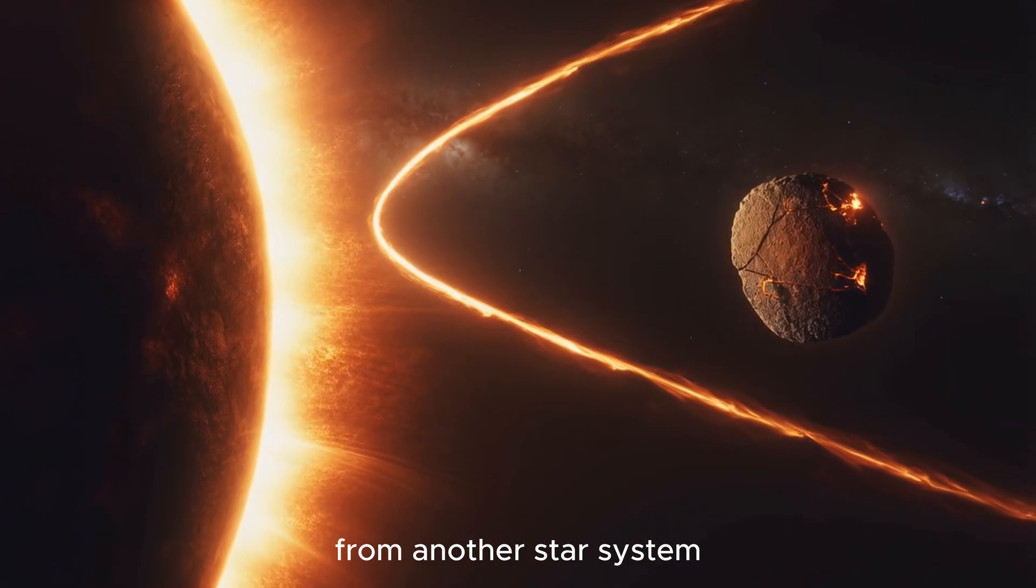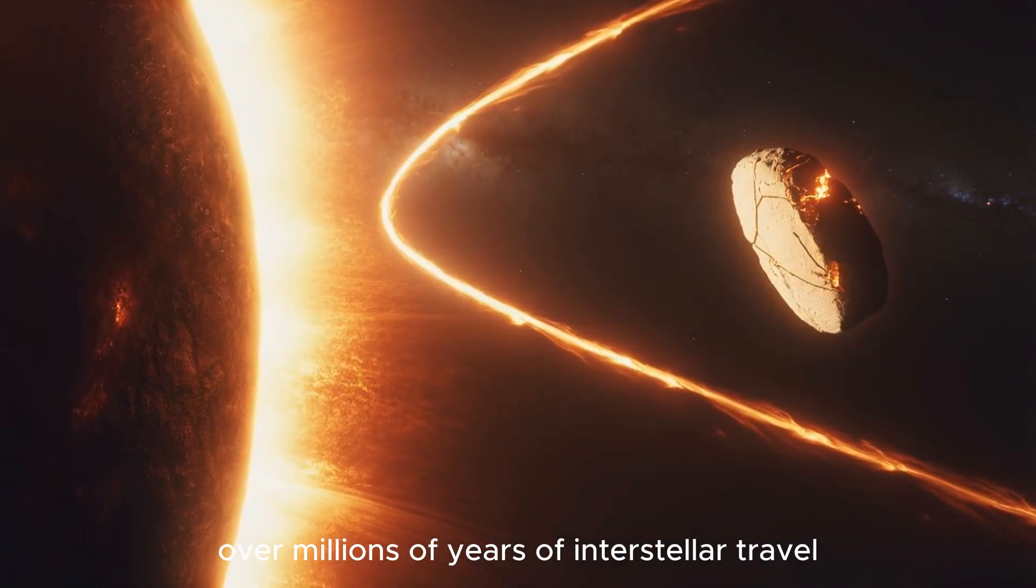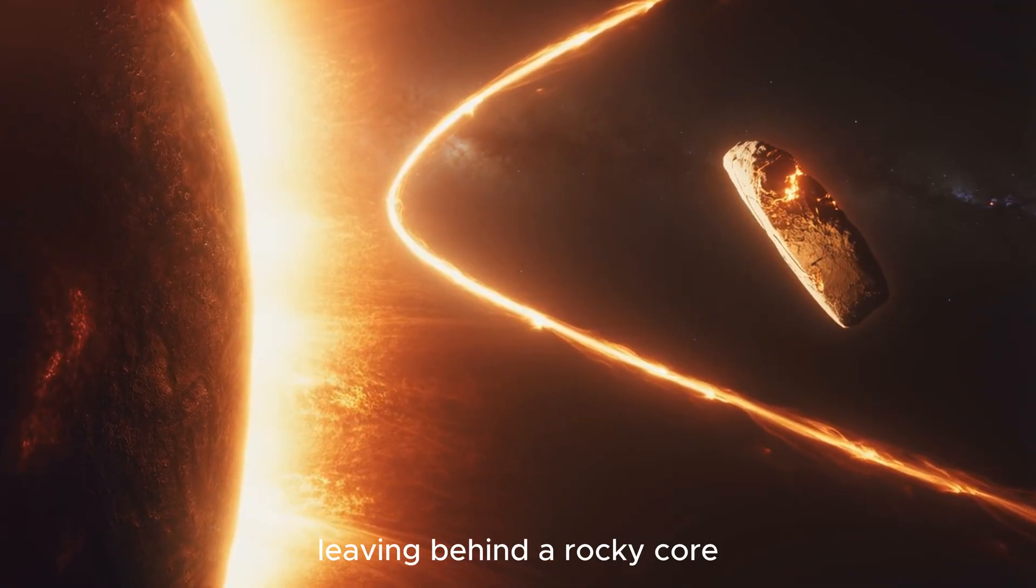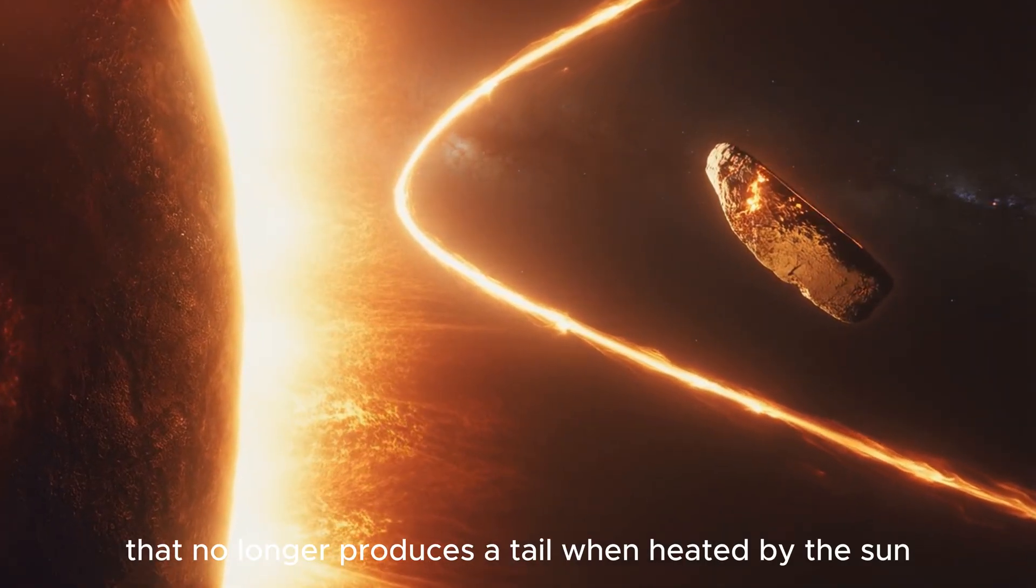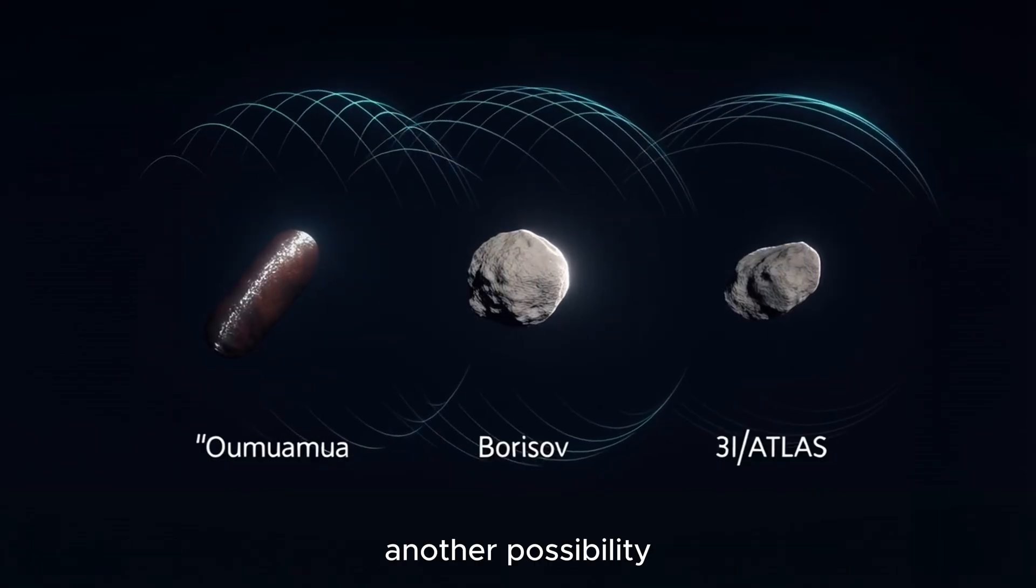The most widely accepted theory is that it could be a fragment of a comet from another star system, one that has lost its volatile ices over millions of years of interstellar travel, leaving behind a rocky core that no longer produces a tail when heated by the sun.